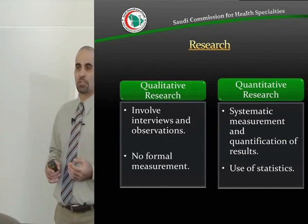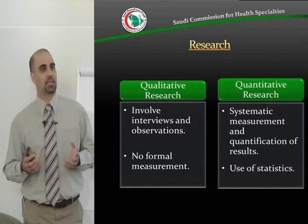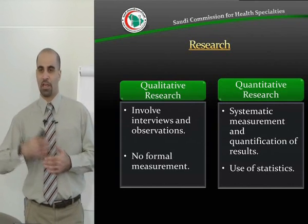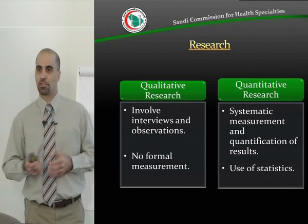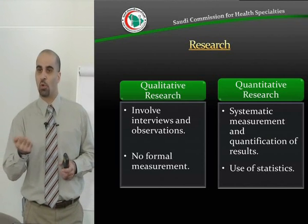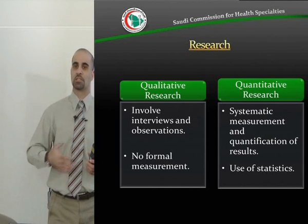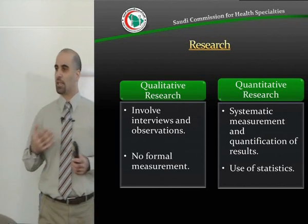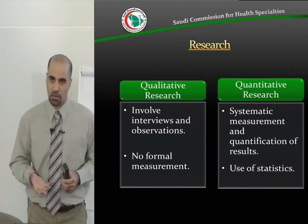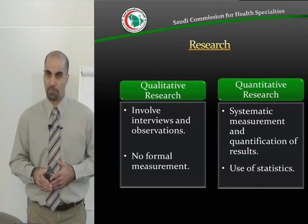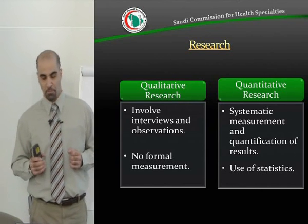Qualitative research is done on a very small number of patients or people — say five or ten people. We have an interview with them, ask them questions, they answer, and we record everything they say. Then we listen to these recordings over and over again and make themes, trying to make sense of what they are saying. This is why it's called qualitative — there is no formal measurement.